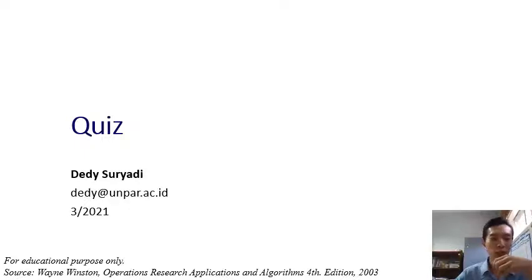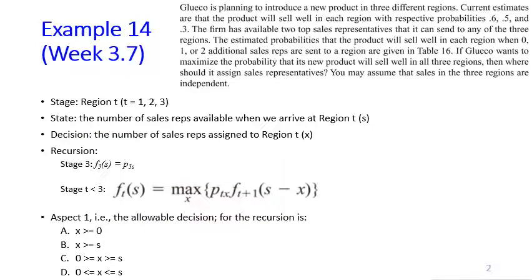Okay, so here's one short question for the quiz. We have the Glaxco problem and we have defined the stage, state, decision, and the recursion functions. Now the question is: Aspect 1, which is the allowable decision for this recursion, can be defined as? Choose one correct answer between A, B, C, D. There will be a pause on the video and then I will give you the answer after the pause.